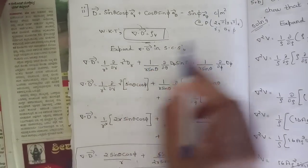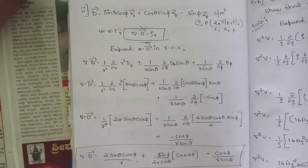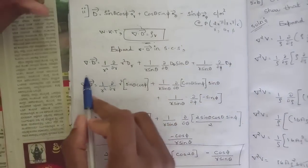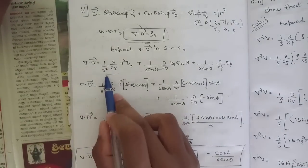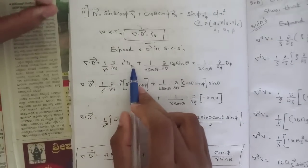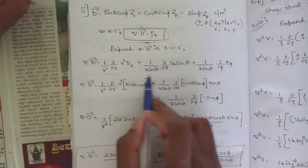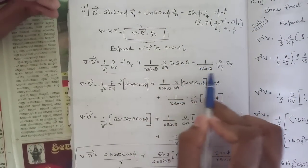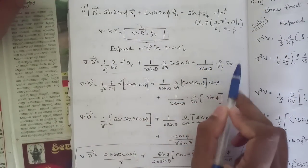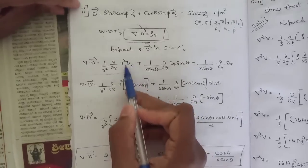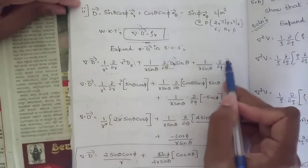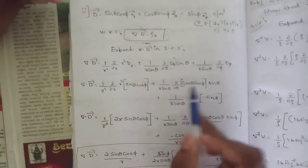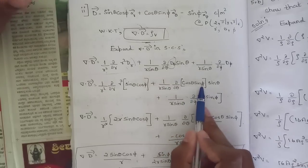Expanding del·D in spherical coordinates: del·D = (1/r²)(∂/∂r)(r² Dr) + (1/(r sinθ))(∂/∂θ)(Dθ sinθ) + (1/(r sinθ))(∂/∂φ)(Dφ). Substituting Dr = sinθ cosφ, Dθ = cosθ sinφ, Dφ = −sinφ.